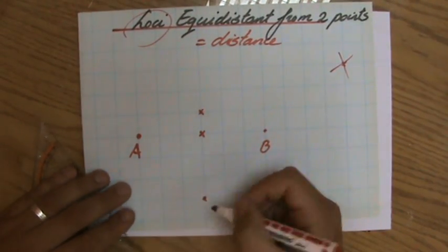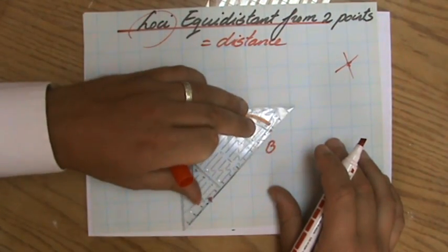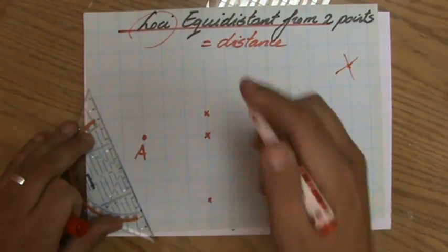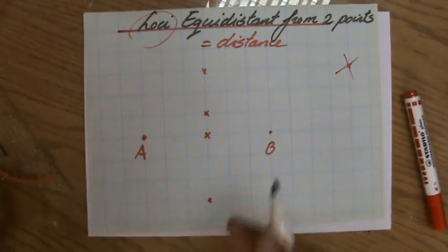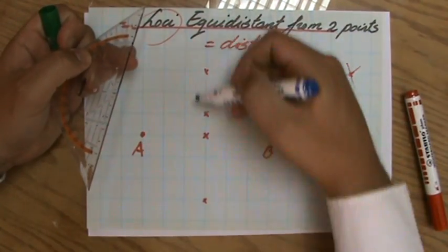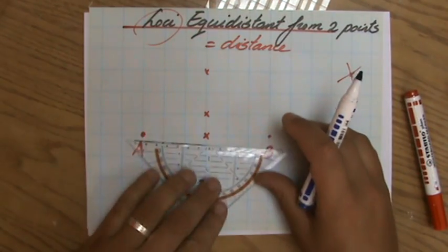But, for instance, over here, again, it's equidistant. You see that? It's the exact same distance. Same over there. So how do I construct those points? Now, this is what you have to do. Hopefully, you already see it. It's a particular line. And how do we call that line?